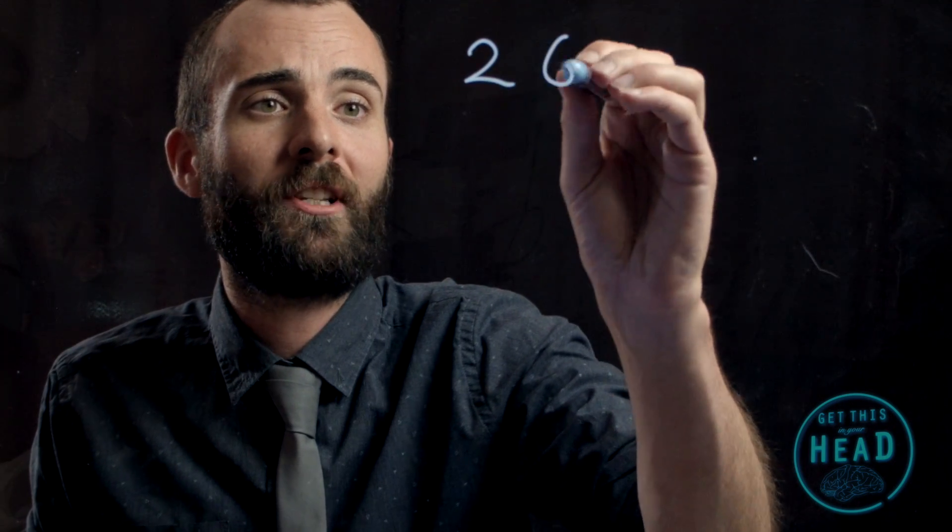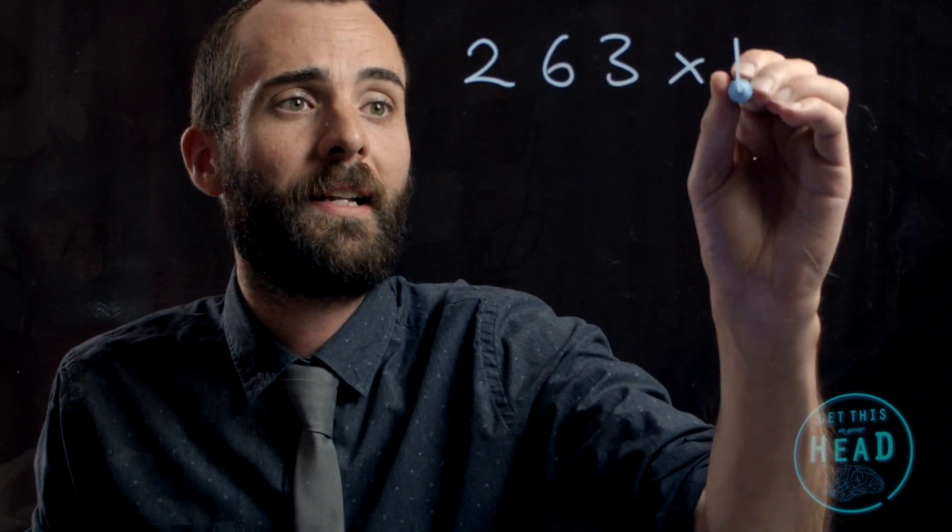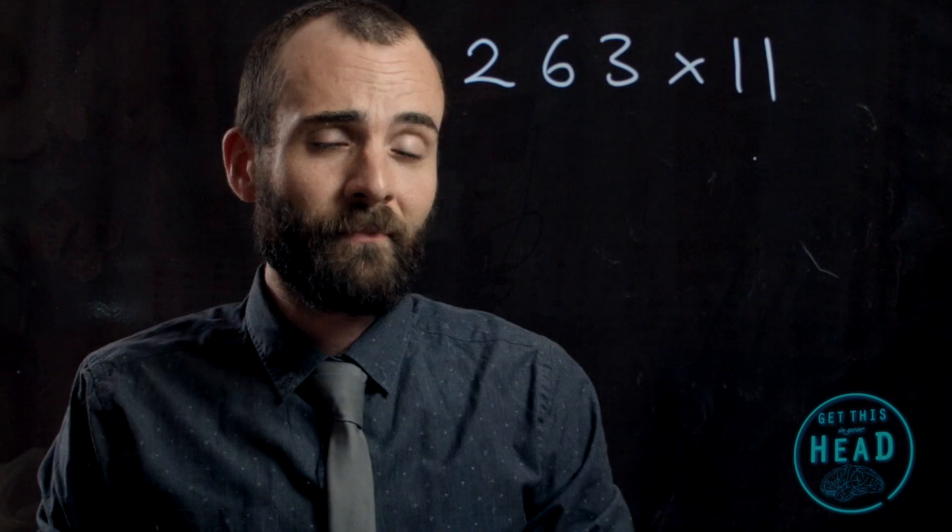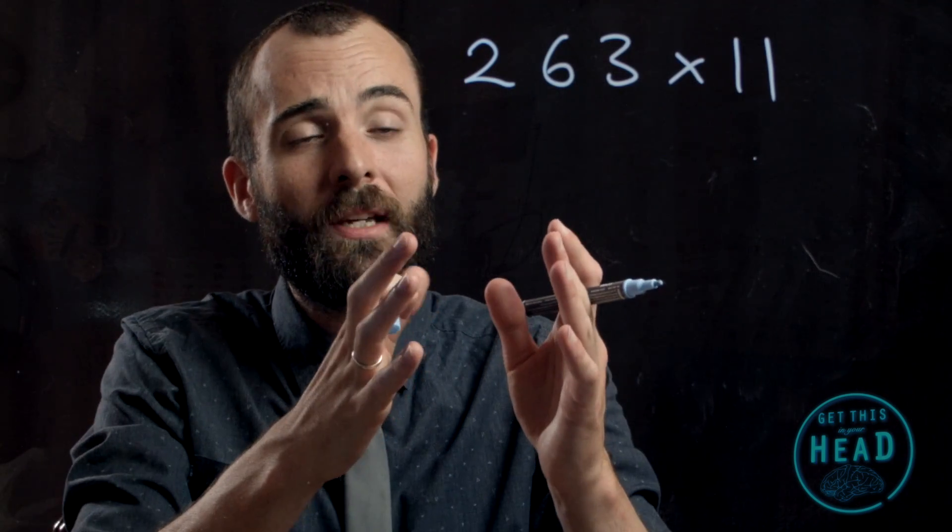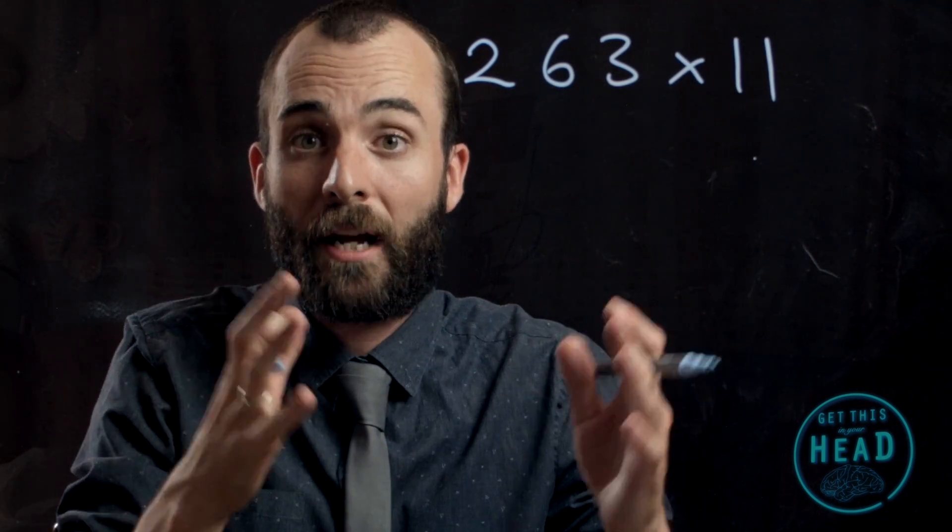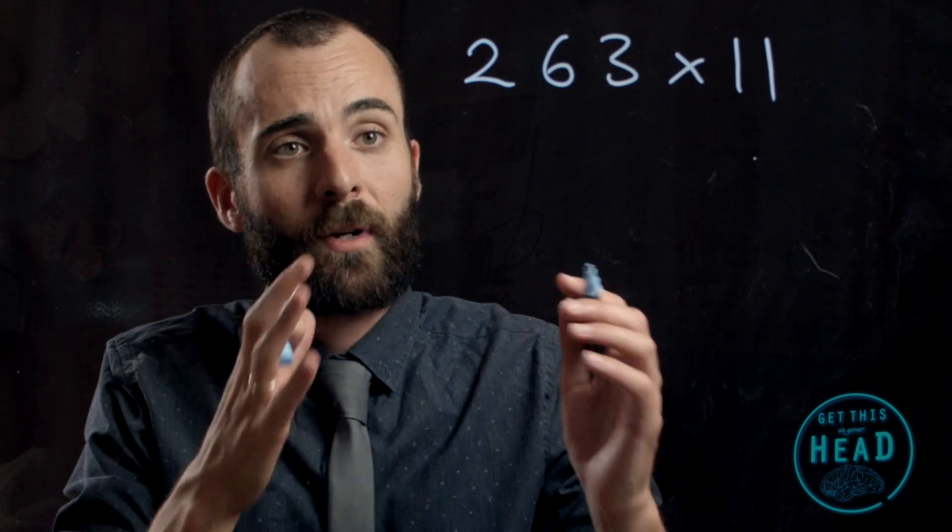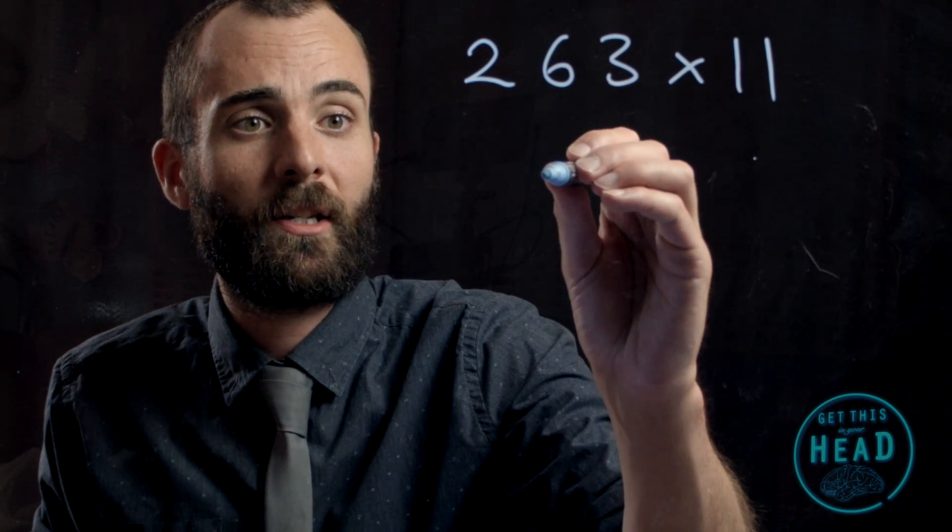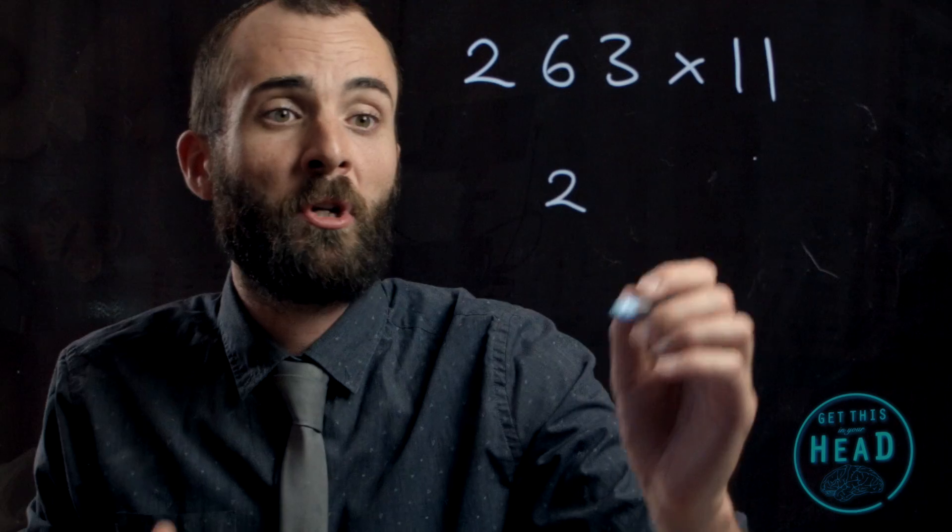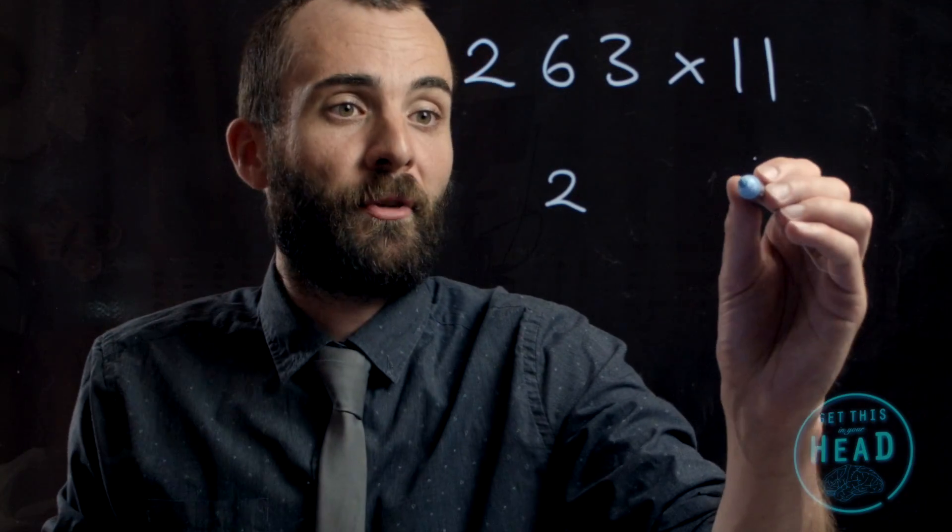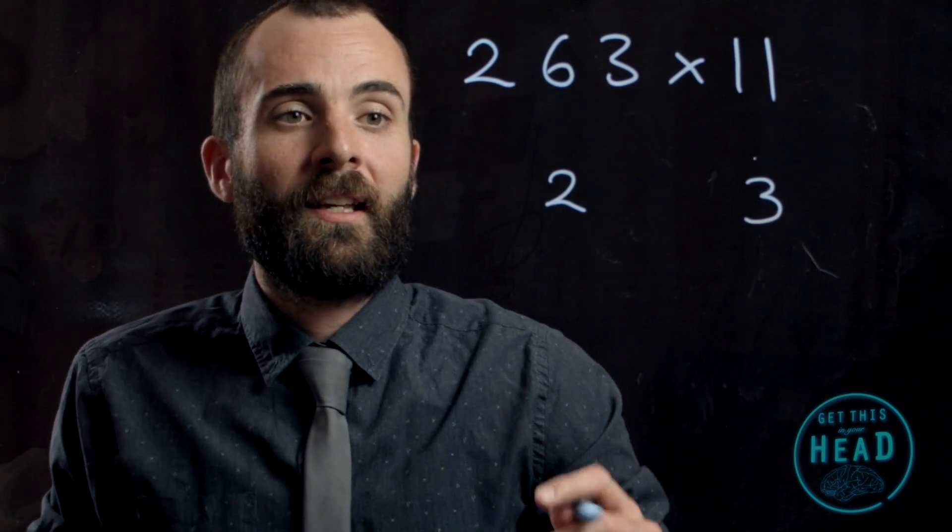Now the final stage is to work out what happens if you're multiplying 11 by a number with more than two digits. For example, let's say we're doing 263 multiplied by 11. In exactly the same way, we assume it's going to increase by a digit, so it's going to be a four-digit number. We put the 2 at the beginning and then a 3 at the end.